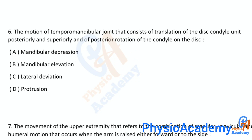Question number six: The motion of the temporomandibular joint that consists of translation of the disc-condyle unit posteriorly and superiorly, and of posterior rotation of the condyle on the disc: A) mandibular depression, B) mandibular elevation, C) lateral deviation, D) protrusion. The correct answer is option B: mandibular elevation.